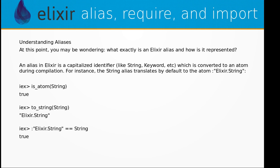Understanding aliases: at this point you may be wondering what exactly is an Elixir alias and how is it represented. An alias in Elixir is a capitalized identifier like String, Keyword, etc., which is converted to an atom during compilation. For instance, the String alias translates by default to the atom Elixir.String.